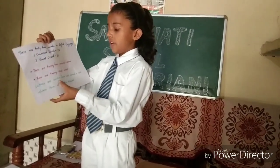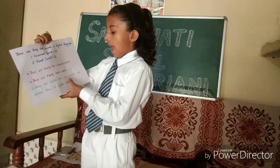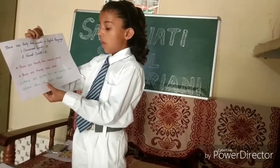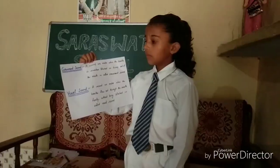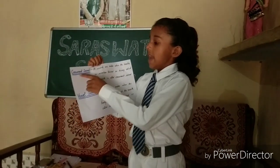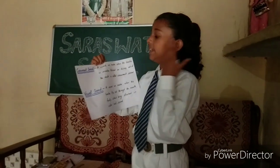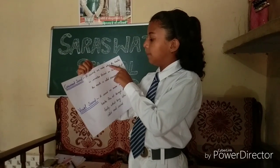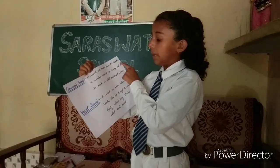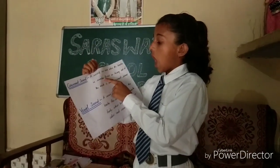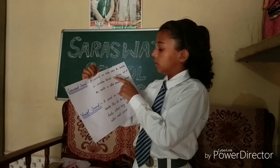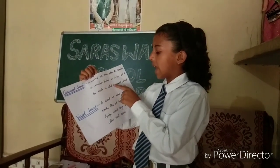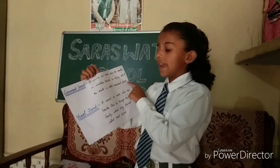Letters are written form and sounds are spoken form of English alphabet. Consonant sound: a sound we make when the breath is somehow blocked on its way out of the mouth is called consonant sound.